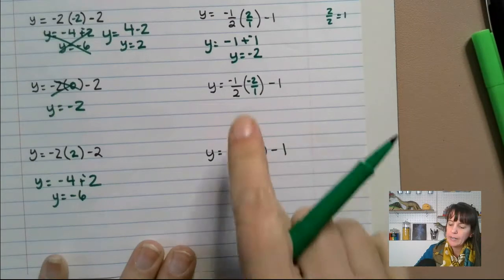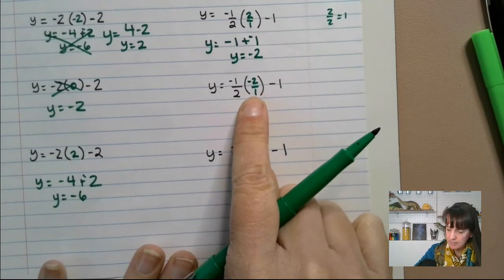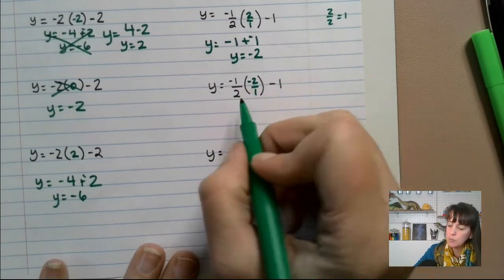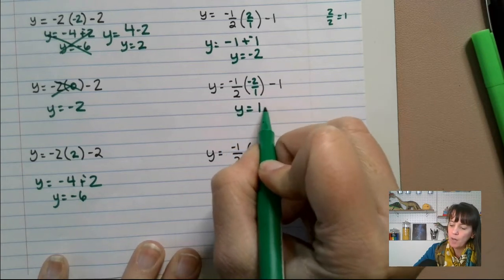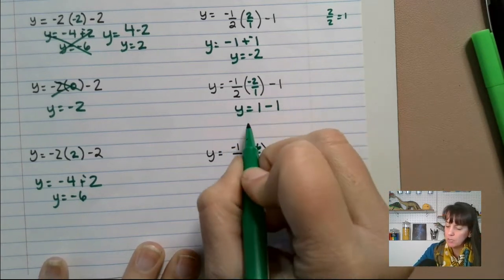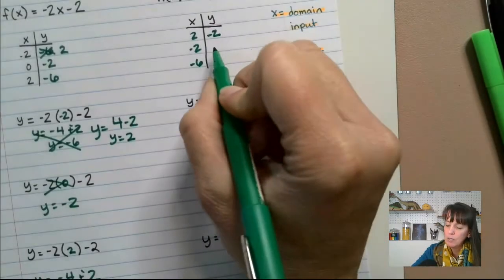Over here, negative times a negative is a positive. And again, one half times two. So we get positive one. So y equals one minus one, which equals zero. Let's go ahead and put that in there.